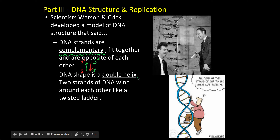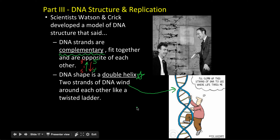Also, the shape is a double helix. So anytime you're asked in class what DNA is like — it's a double helix. It's basically two strands that run in opposite directions, and then they twist around each other. You can see how they wind like a twisted ladder or a staircase.